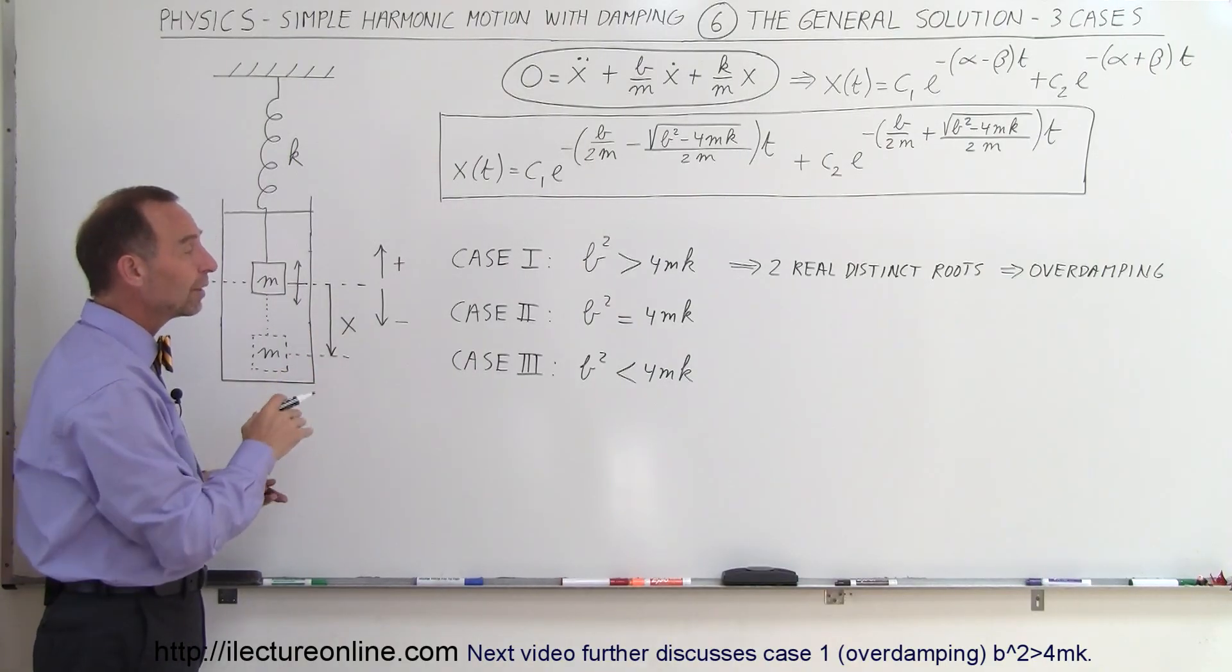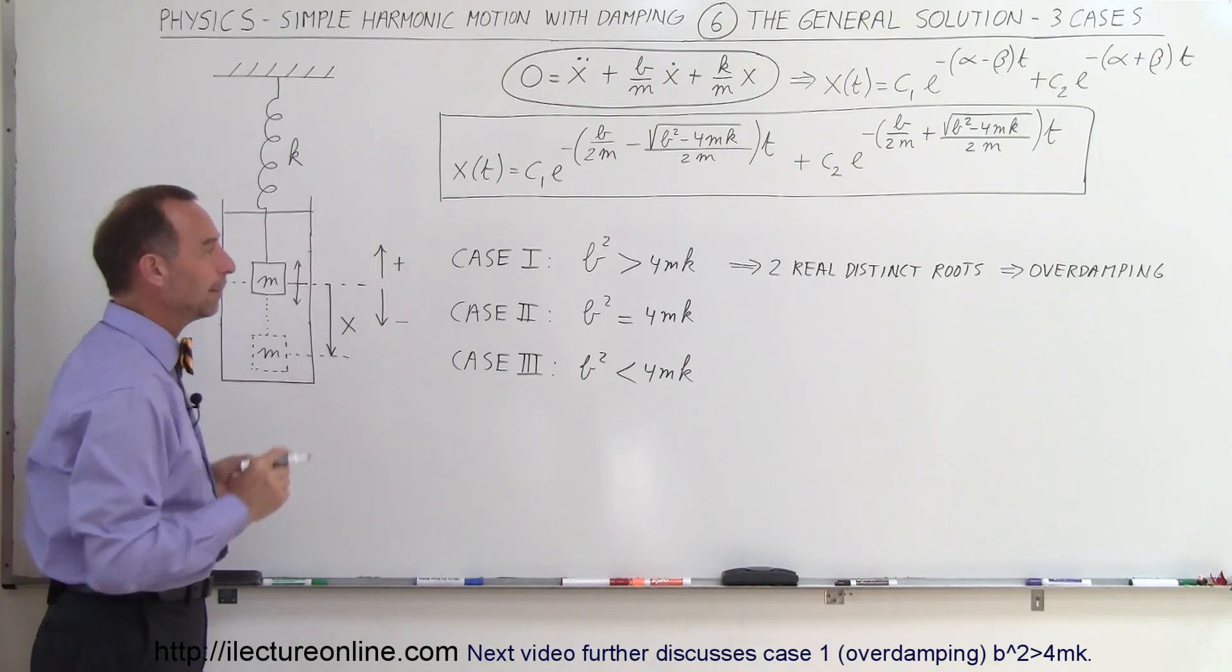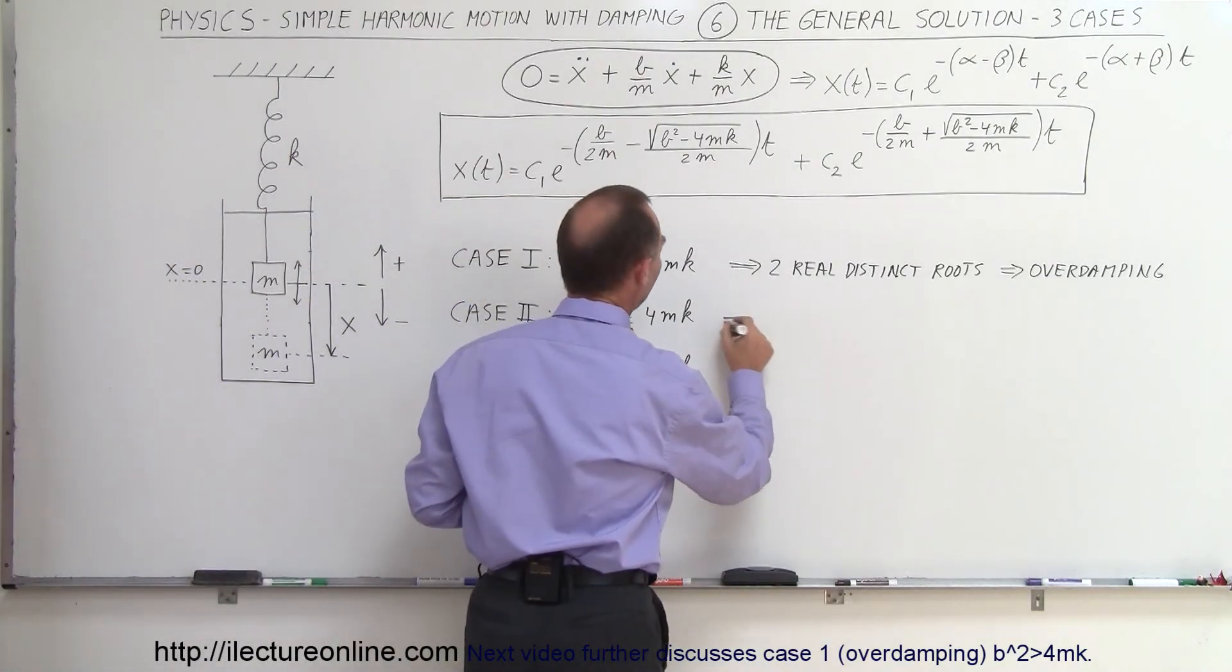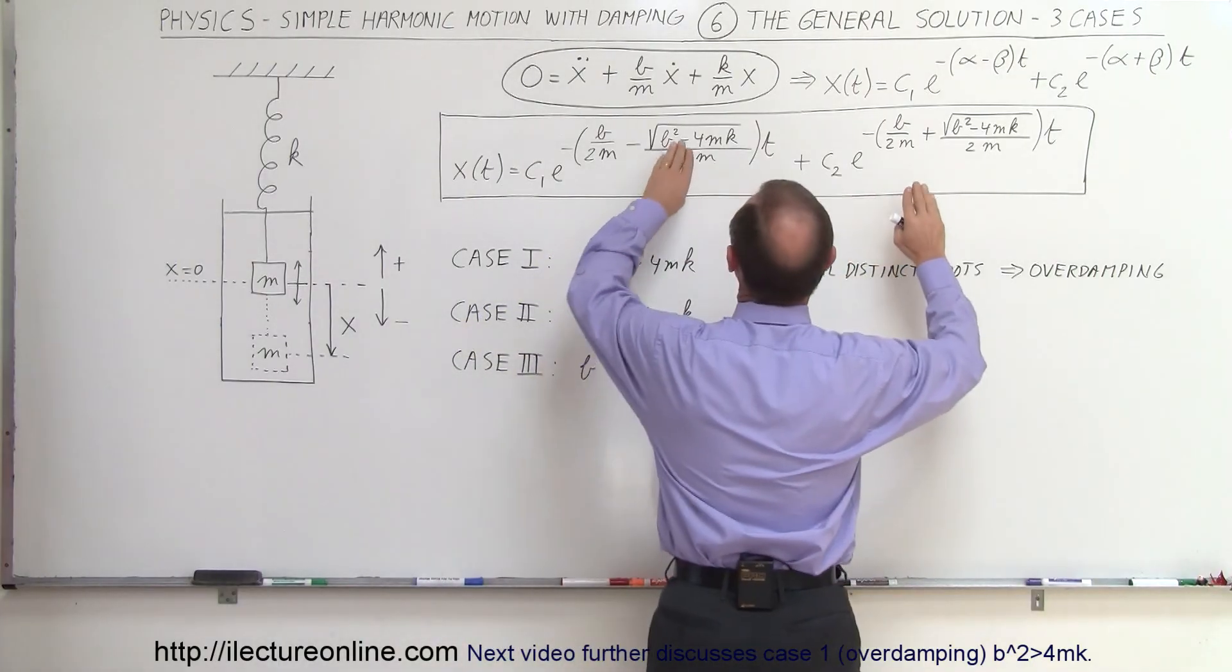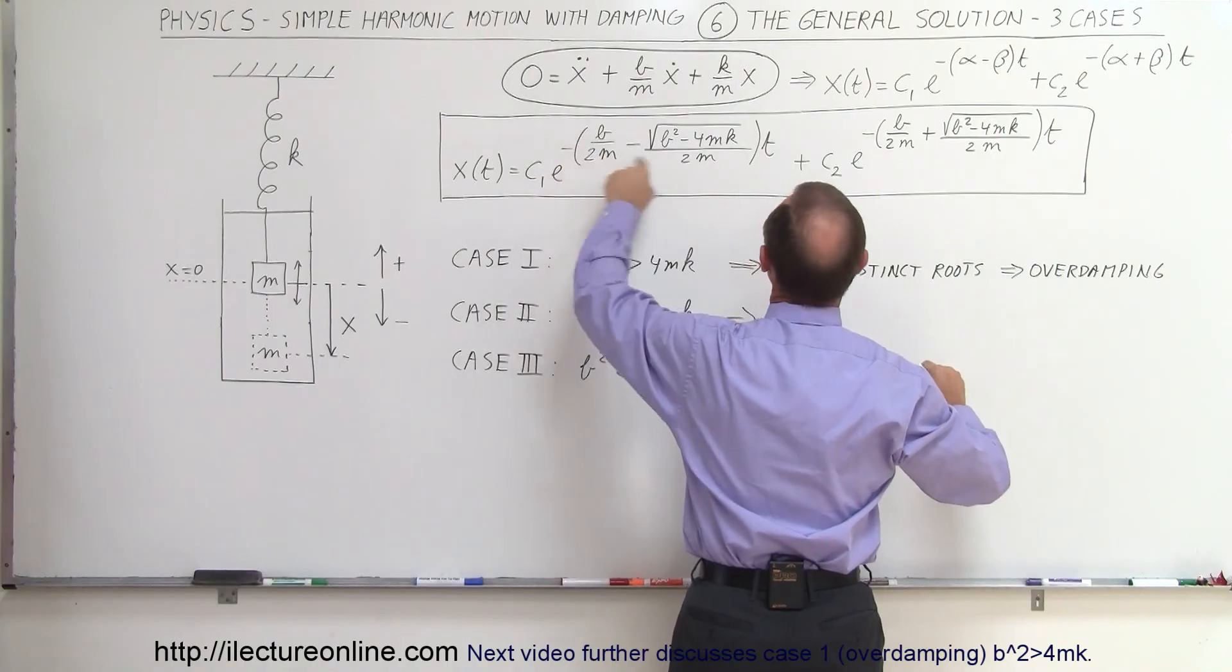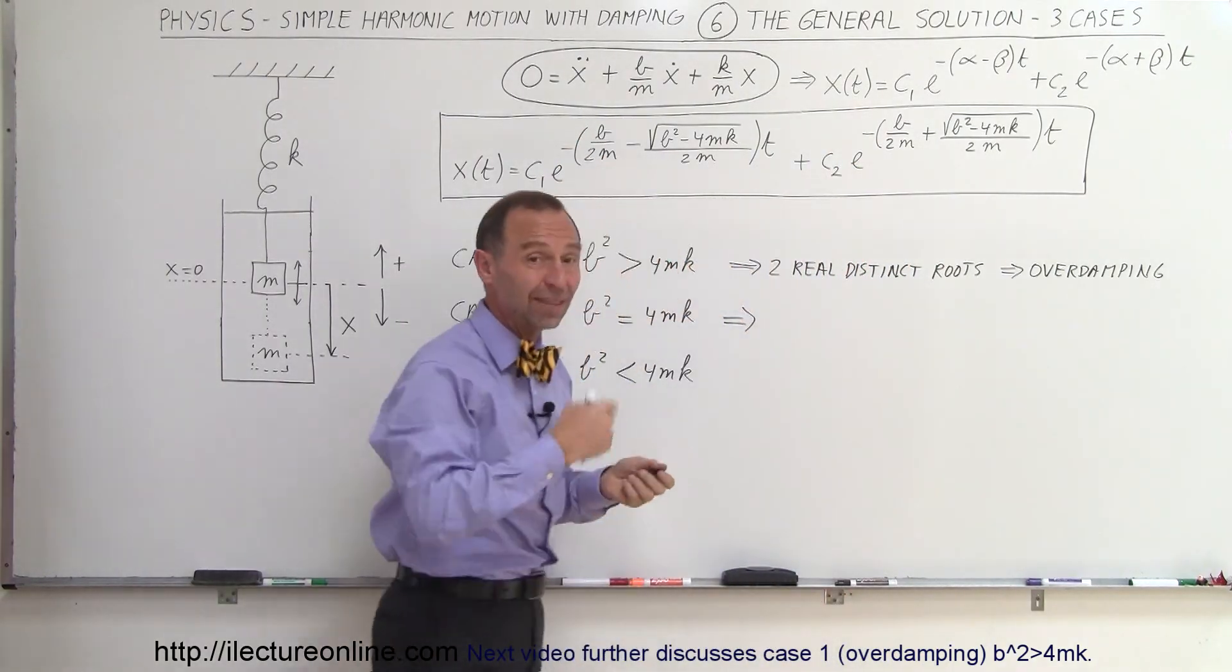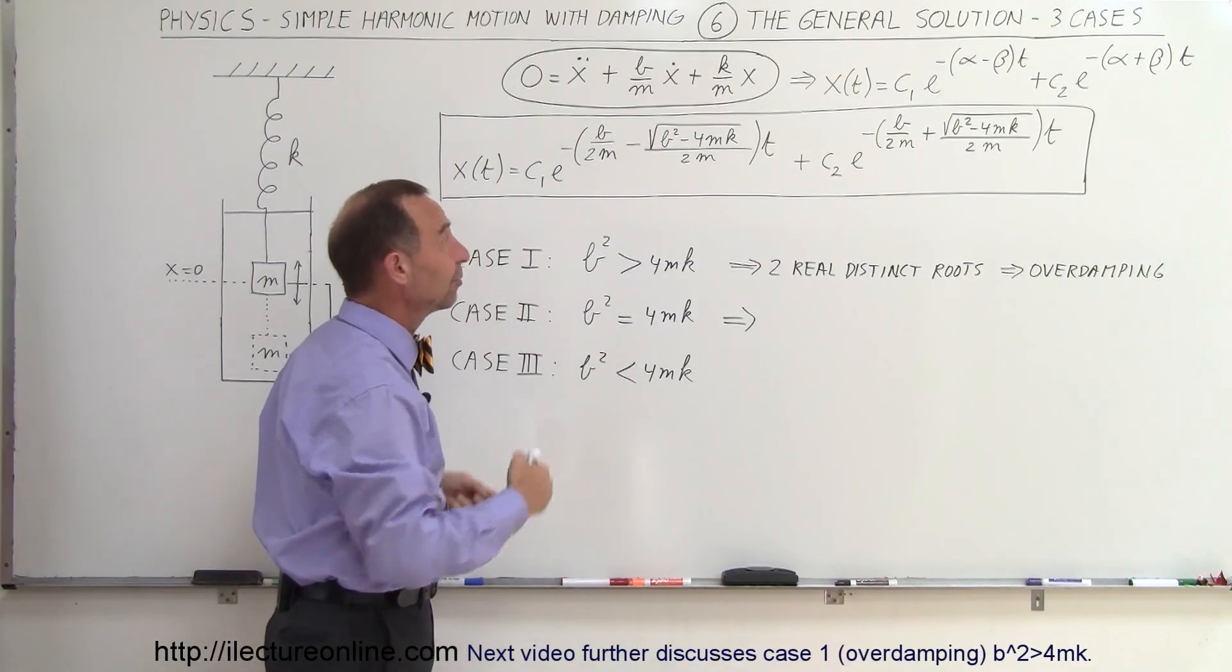The second case where B squared is equal to 4MK, that would be what we call critical damping. And what happens then is that we have this and this goes to zero. So we have e to the minus B over 2M and e to the minus B over 2M simply added together. That would simply be C1 plus C2 times e to the minus B over 2M.